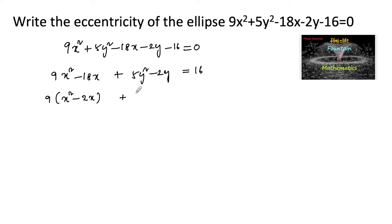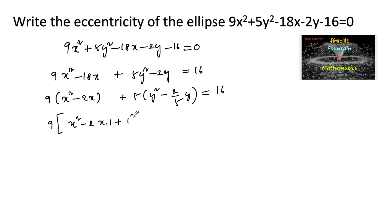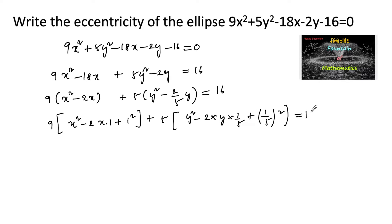Taking 9 common: 9(x² - 2x) and 5 common: 5(y² - 2/5·y) = 16. We can write x² - 2·x·1 + 1² and y² - 2·y·(1/5) + (1/5)², so 9 times 1² is added and 5 times (1/5)² is also added on both sides.